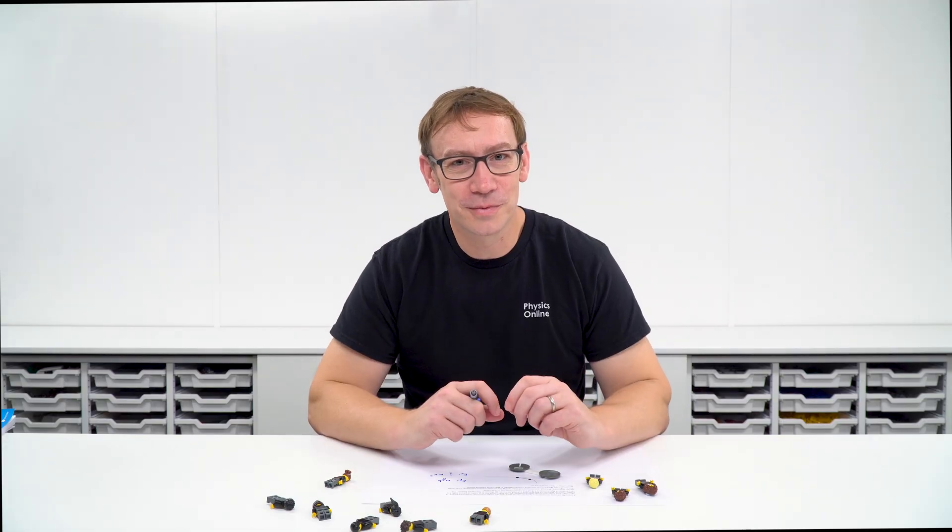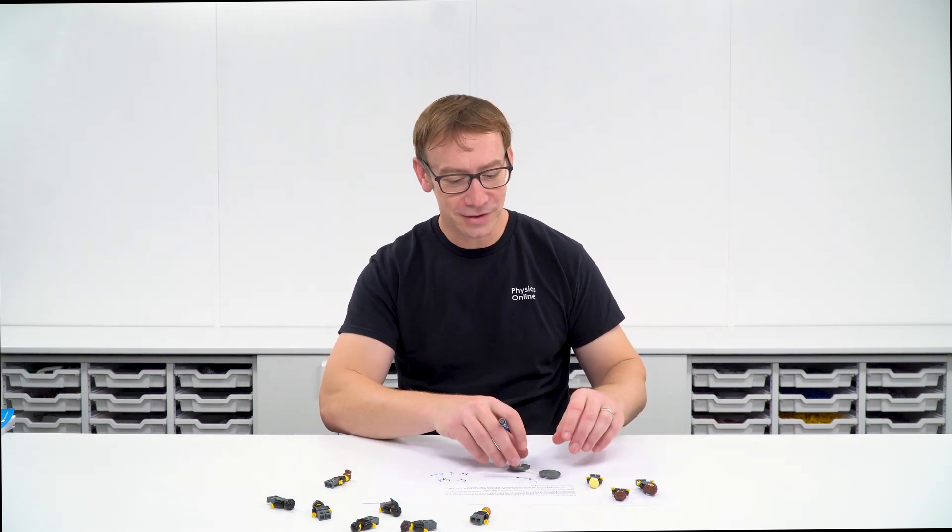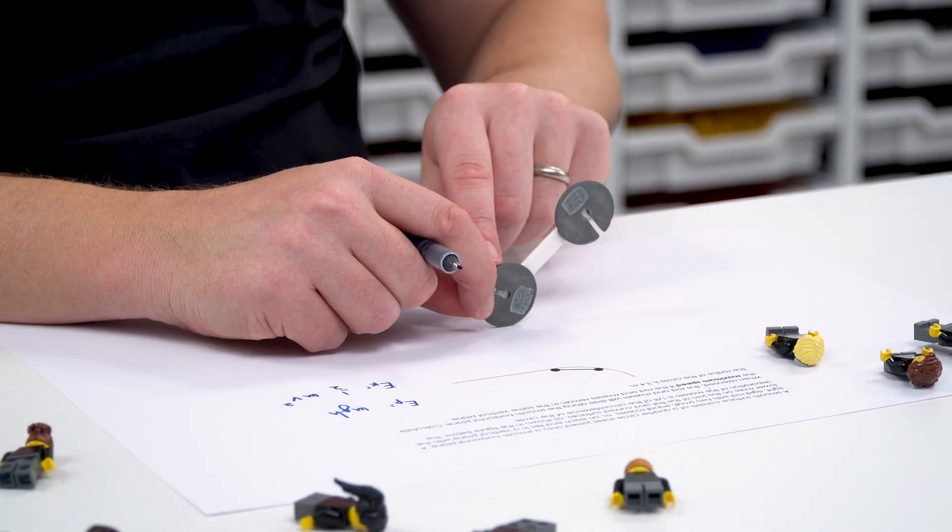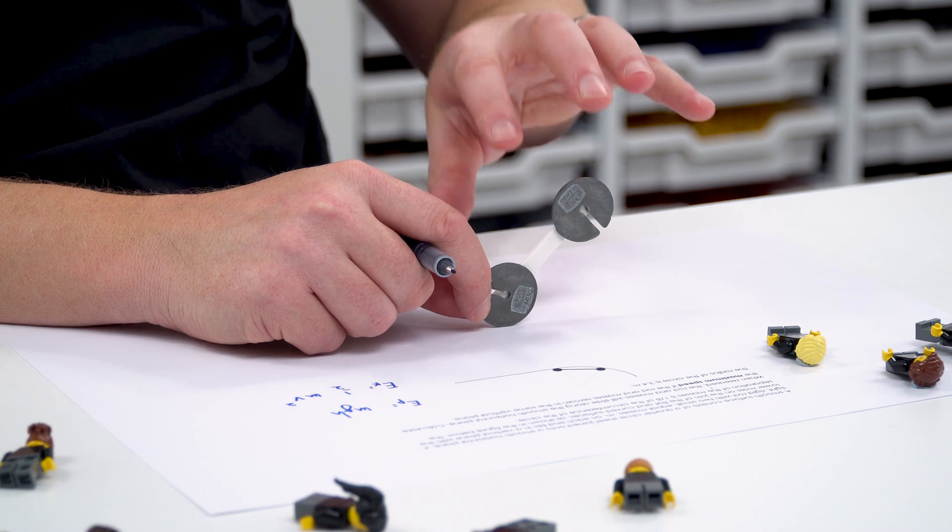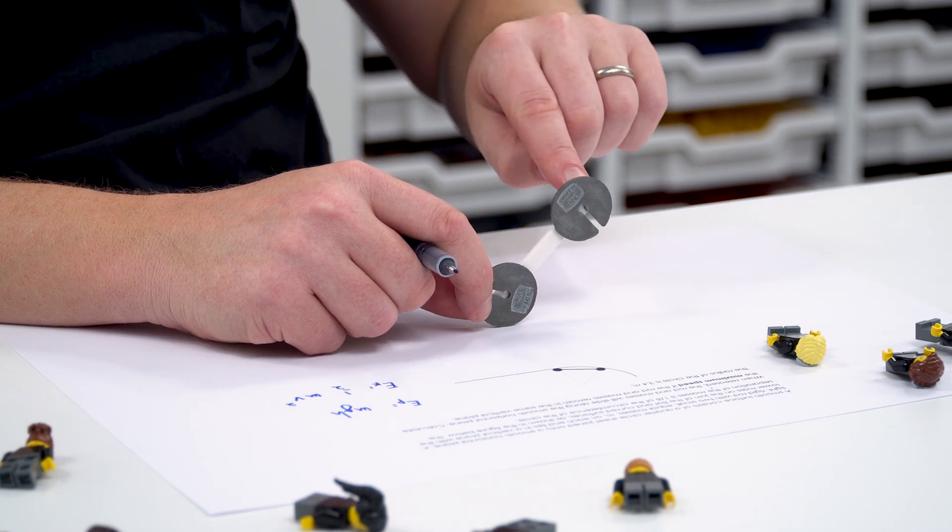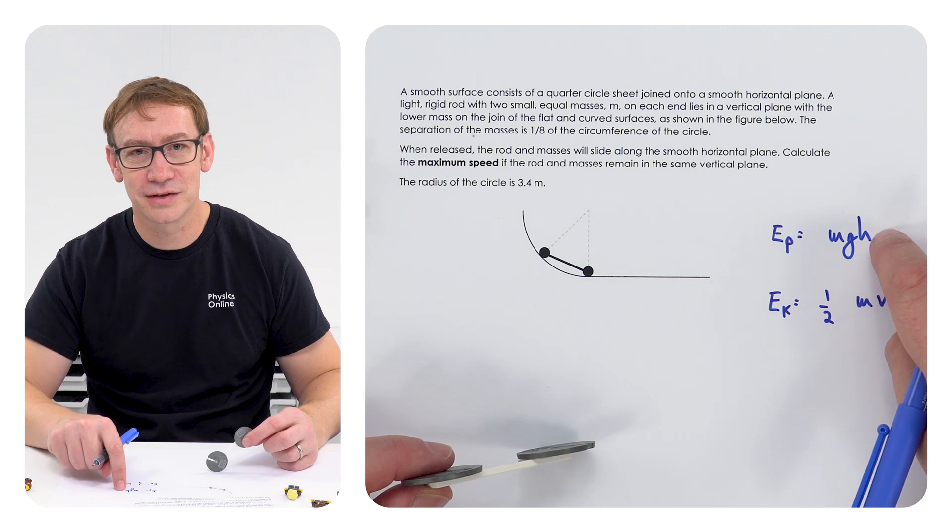Now what makes this more tricky than simple GCSE questions is you need to know when to apply the different equations. Initially one of the masses is on the table and the other is up in the air, and that means the gravitational potential energy of this whole system is due to this mass up here. So EP equals MGH is the starting energy.